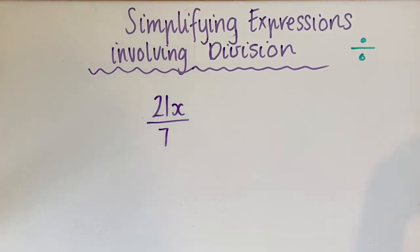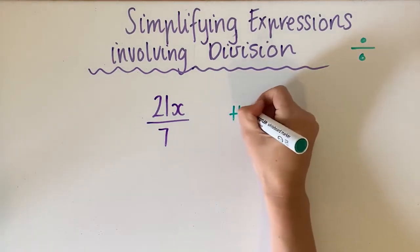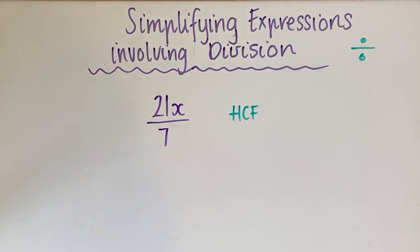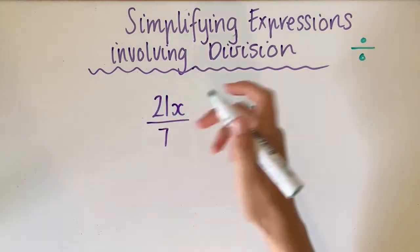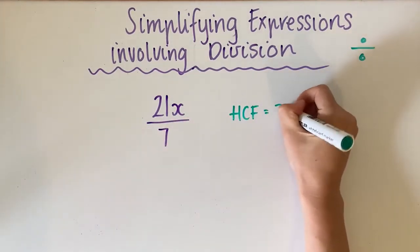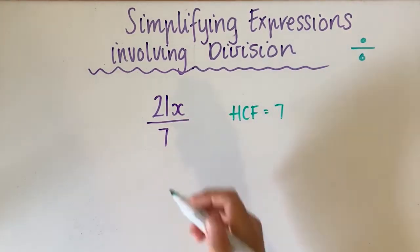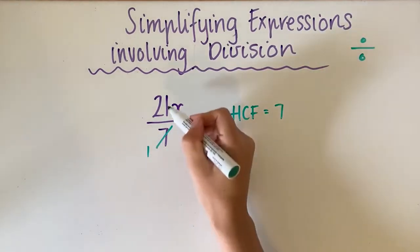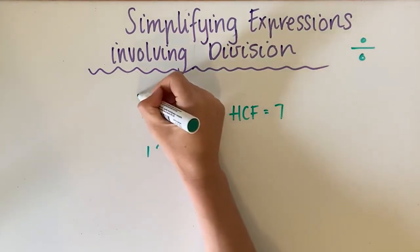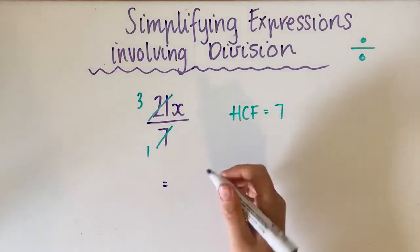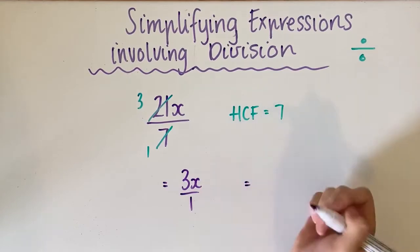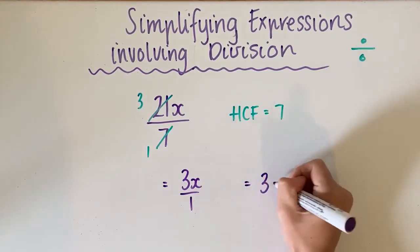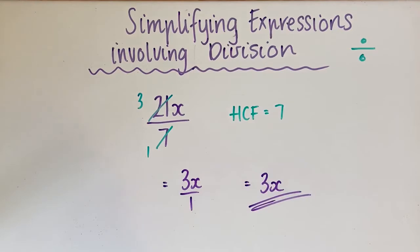For this example we need to think of the biggest number that can go into 7 and 21 — that is the highest common factor. The biggest number that goes into 7 is 7, and that also goes into 21, so our highest common factor is 7. 7 goes into 7 one time, and 7 goes into 21 three times. So our fraction becomes 3x over 1, and anything over 1 is just itself, so our final answer is 3x.